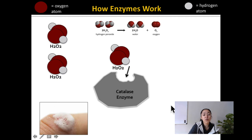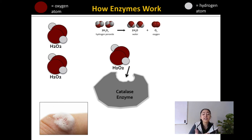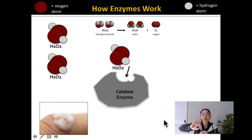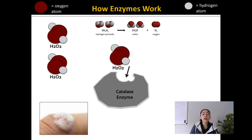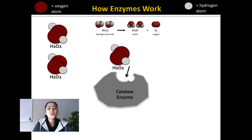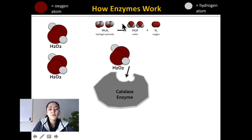Whenever you pour hydrogen peroxide on a cut, why is it actually bubbling? What's happening is that our body is releasing the enzyme catalase, and this enzyme is interacting with the hydrogen peroxide that you poured on that cut. It's actually the catalase interacting with the hydrogen peroxide that causes that bubbling in an open wound. So in the example of hydrogen peroxide, here would be our enzyme catalase and hydrogen peroxide is our substrate. We need two hydrogen peroxide molecules to create water and oxygen.